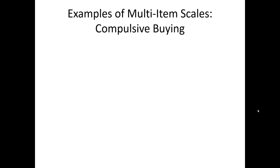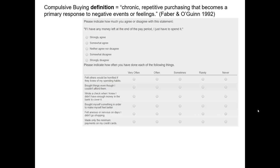Oftentimes when we measure subjective properties, we use multi-item scales. I'd like to provide a couple of examples of multi-item scales used in marketing research. In particular, we're going to look at compulsive buying. There's a paper from 1992 by Faber and O'Quinn where they define compulsive buying as chronic, repetitive purchasing that becomes a primary response to negative events or feelings. So negative, stressful events trigger some sort of uncontrollable purchasing — this is what they define as compulsive buying.